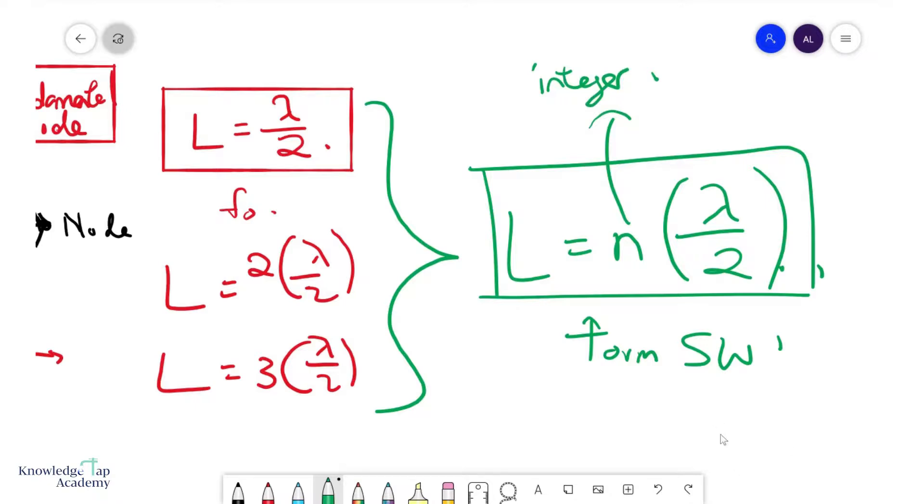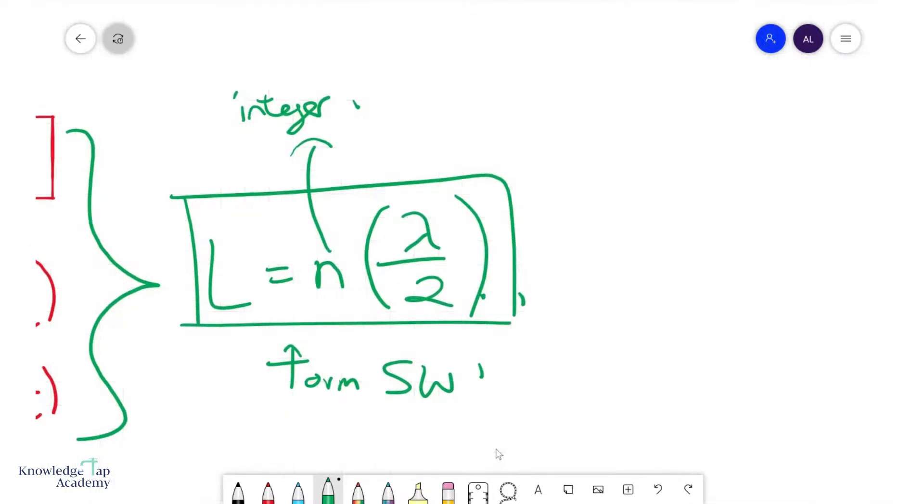This integer value n, by the way, is also called the harmonic. So for example, if you had a string of length one meter, 100 centimeters, and you had a lambda of 10 centimeters, you'll realize that n equals to 20. And that would be what we call your 20th harmonic. This is going to be pretty hard to draw, but between your string you'll have 20 of these half wavelengths being formed.